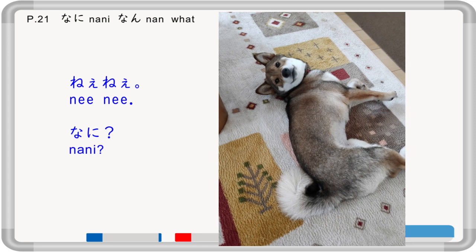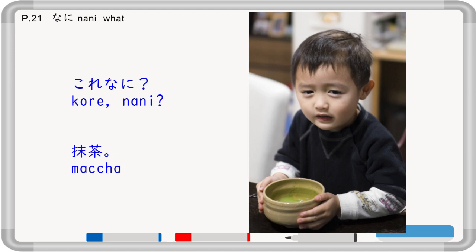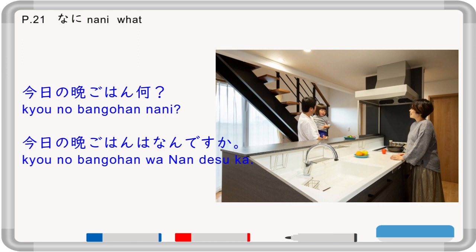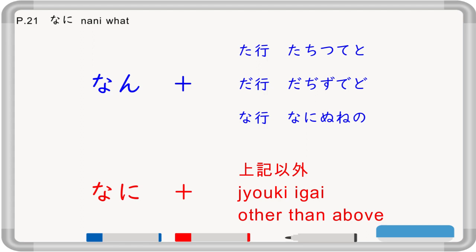Now, 'what' in Japanese — there are two words for 'what': nani and nan. 'Kore nani?' — 'Matcha.' 'Kyo no ban gohan wa nan desu ka?' If you speak politely: 'nani desu ka?' Without desu: just 'nani?' Grammatically, nan comes before words in the ta-chi-tsu-te-to and da row. If those words follow, it must be nan; otherwise use nani.